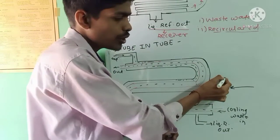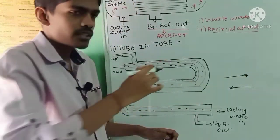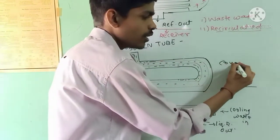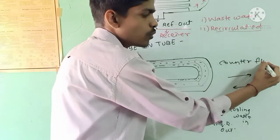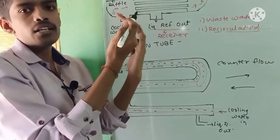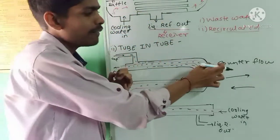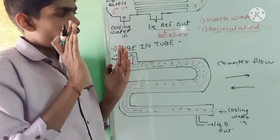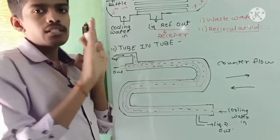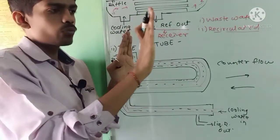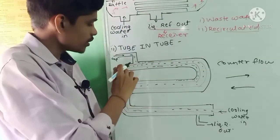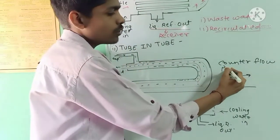When cooling water and vapor refrigerant flow in opposite directions, the system is known as a counter flow system. When both the cooling water and vapor refrigerant travel in the same direction, it is known as a parallel flow system.